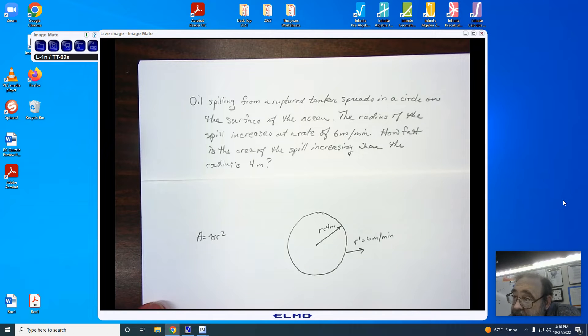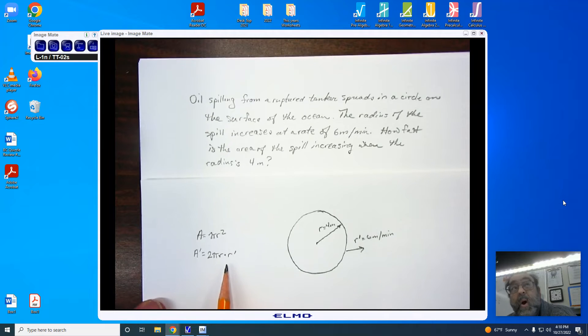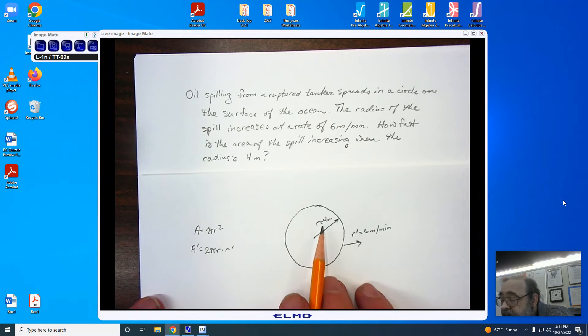Since we're working with implicit differentiation in terms of time, what we're going to need to do is find A prime equals 2 pi r times r prime. We now have r and r prime that we're going to be substituting by the 4 meters and the 6 meters per minute.